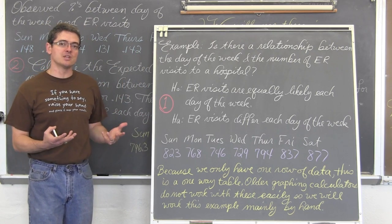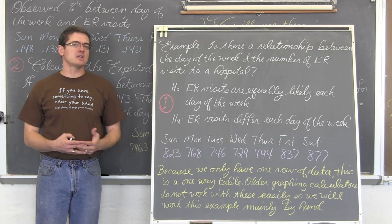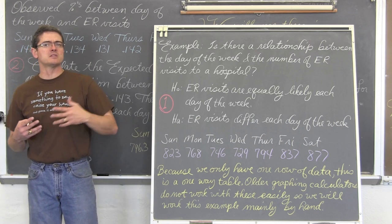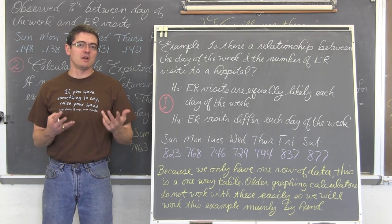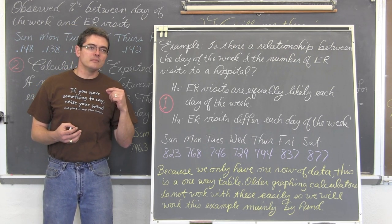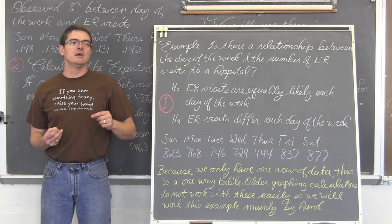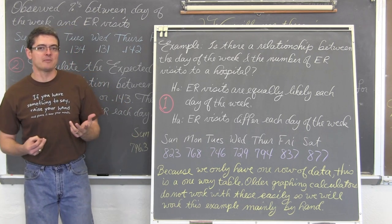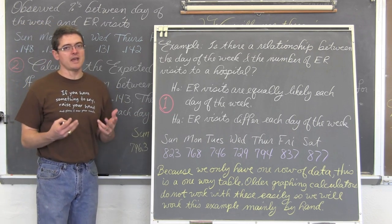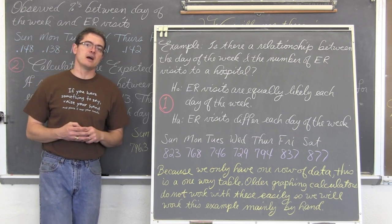My problem doesn't say anything about, it doesn't hypothesize or it is not a company claiming that, or a hospital claiming this is what percent of our ER visits are on Sunday, Monday, Tuesday, and so on. It just says is there a relationship? So we are going to assume that each day is equally likely. Remember, we set up H0 as either there is no association, so it would be like no association between the day of the week and whether or not somebody comes into an ER for a visit. And then Ha is that the ER visits do differ from day to day, or that our observed distribution does not fit the hypothesized distribution.